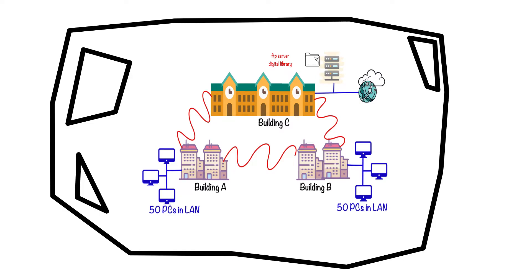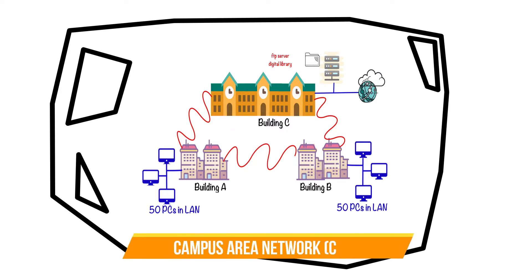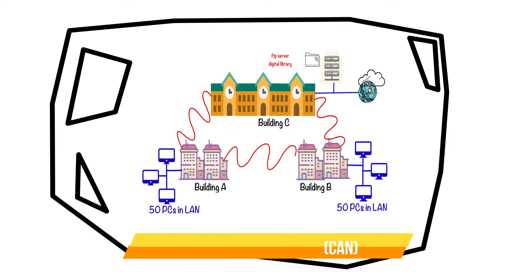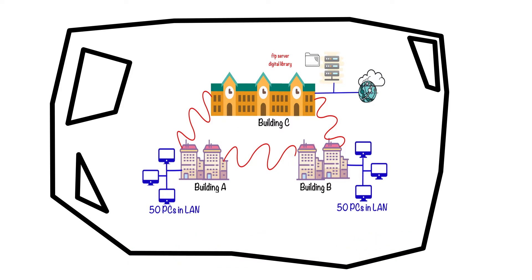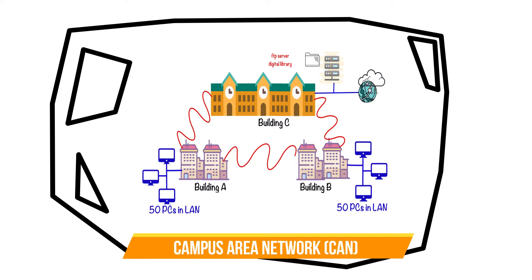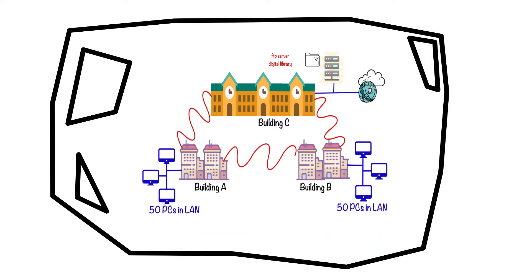The metropolitan area network is very similar to a campus area network but it covers a larger distance. As we know, the campus area network is located within a single geographical location where the buildings face each other to form the campus area network.